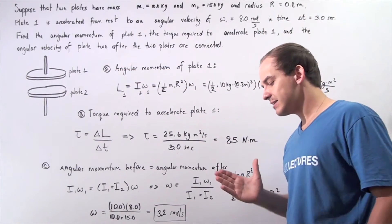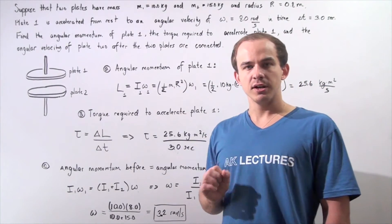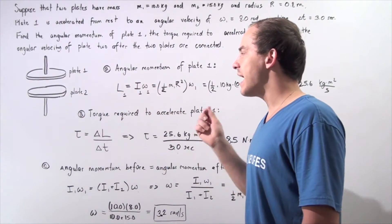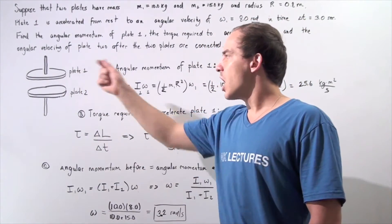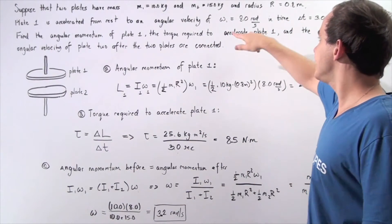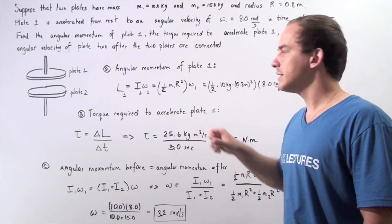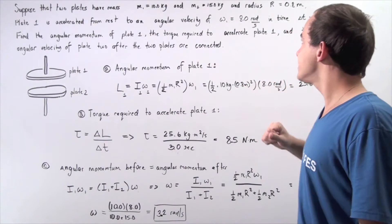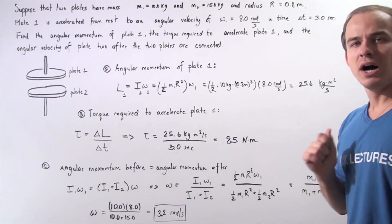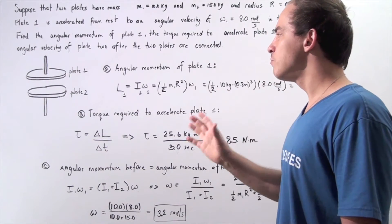Let's begin with part A. We want to calculate the angular momentum of plate 1 after it is accelerated. Recall the formula for angular momentum: L1 equals I1 multiplied by omega 1, where L1 is the angular momentum of plate 1, I1 is the moment of inertia of plate 1, and omega 1 is 8 radians per second. I1 equals one-half M1 times R squared. With M1 equal to 10 kg and R equal to 0.8 m, we get L1 equal to 25.6 kg·m²/s.